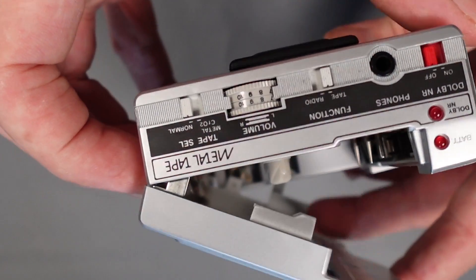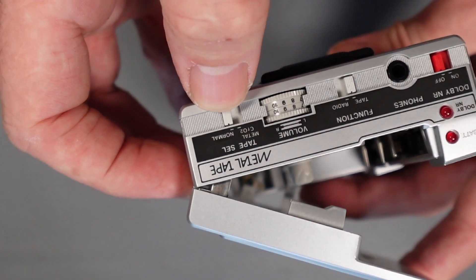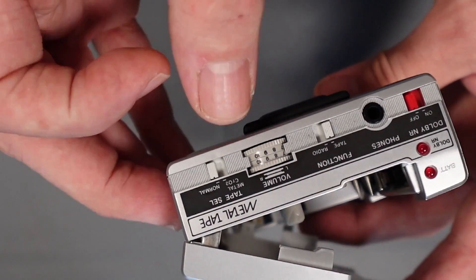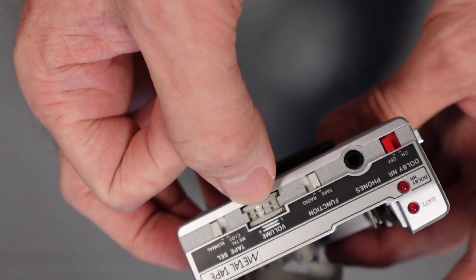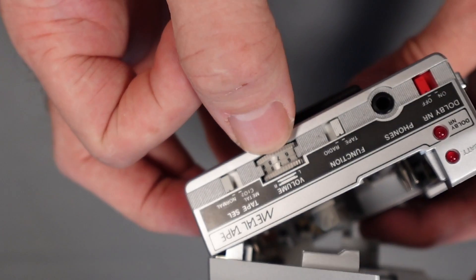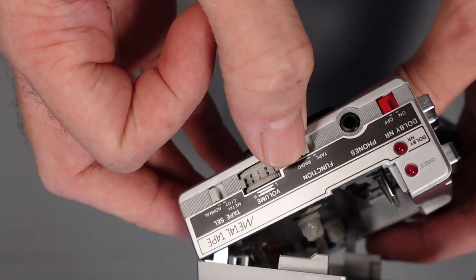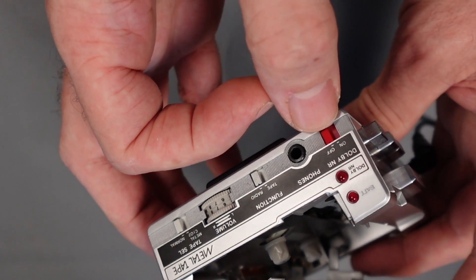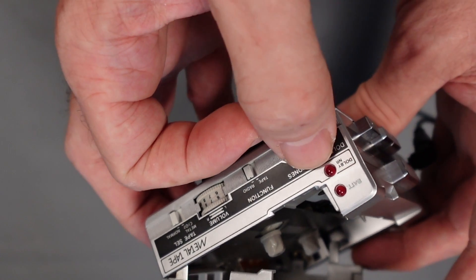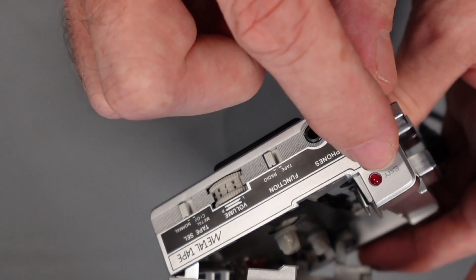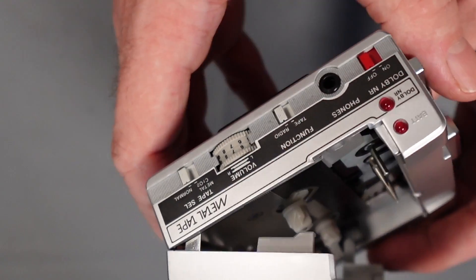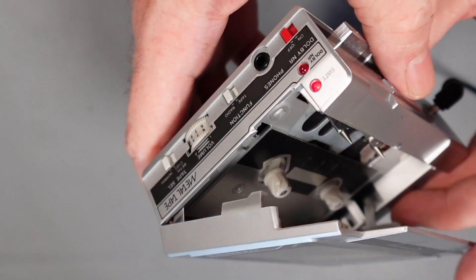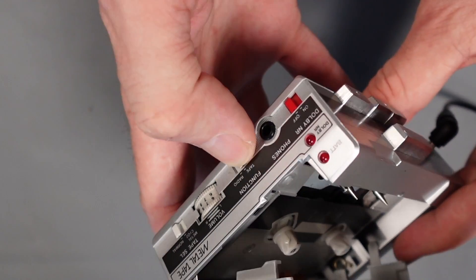So anyway, three volts DC. We've got chrome and normal because it actually plays metal tapes as well as type one. You've got split volumes - left and right independent volume control. You've also got a master switch there for your tape or radio, one headphone out, Dolby on or off with a Dolby noise reduction LED, and also a battery operation LED as well. So anyway, let's just see what happens. Right, so let's select the tape, press play and we're away.